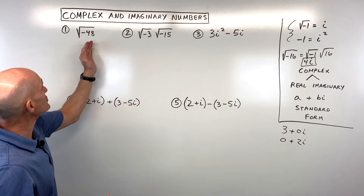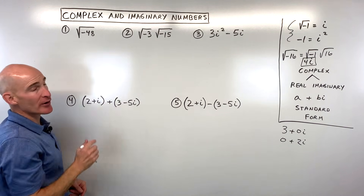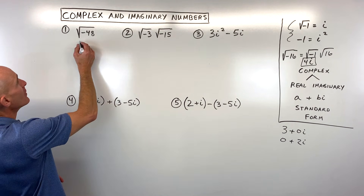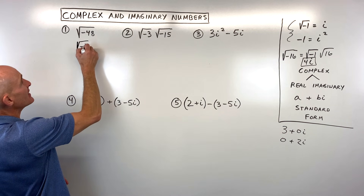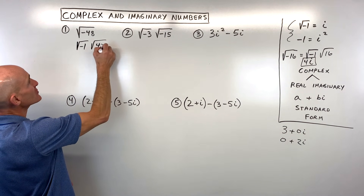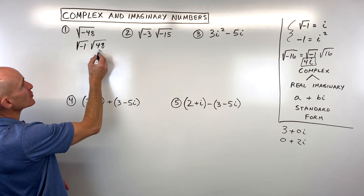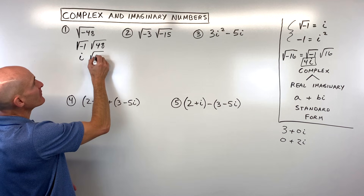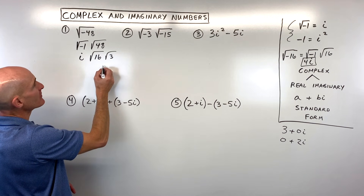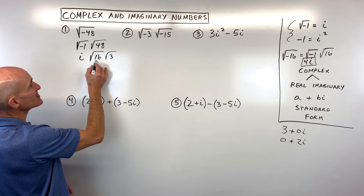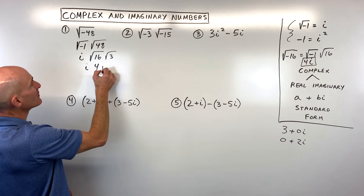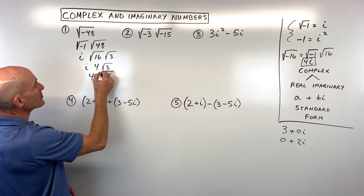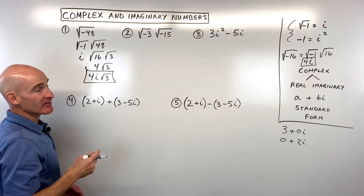For example one, let's simplify the square root of negative 48. We break it down as square root of negative one times square root of 48. The square root of negative one is i. Then 48 simplifies into square root of 16 times square root of 3, and square root of 16 is a perfect square — that's four. So rewriting this, we get four i square root of three, and that's our final result.